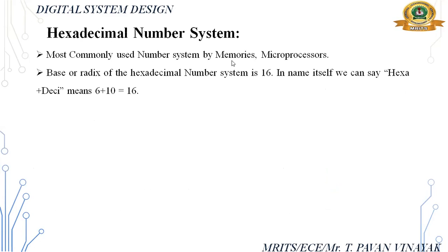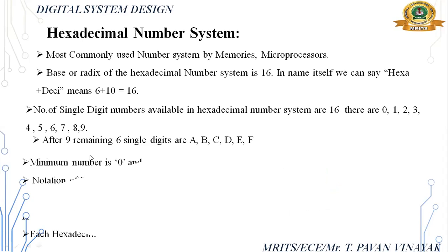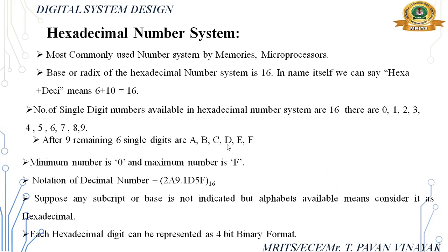Next is the hexadecimal number system, most commonly used in memory and microprocessors. The radix is 16. The number of single digits is 16: 0 to 9, and then the remaining 6 single digits are A to F. The minimum number is 0 and the maximum is F (which equals 15). If no subscript is given and the number consists of alphabetic symbols, we simply consider it as a hexadecimal number. Each hexadecimal digit can be represented as a 4-bit binary number.